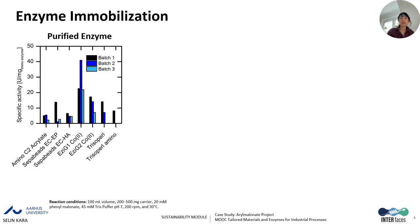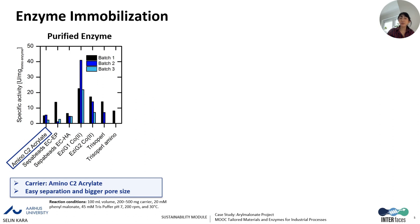First, we used the purified enzyme to compare different immobilization resins. On the left side, the x-axis shows different immobilization resins, and the y-axis shows specific activity. We also compared the change in specific activity among three different batches. Overall, although the aminoacrylate carrier didn't show the highest activity, we decided to go with this carrier because it had the biggest particle and pore size, which is very advantageous for process development. In these experiments, we used immobilized purified enzyme.